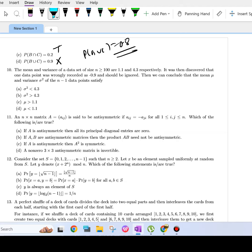Mean and variance of a data set are given as 1.9 and 4.3 respectively. It was discovered that one data point was wrongly recorded as -0.9 and should be ignored. Then we can conclude that the mean μ and the variance σ² of the n-1 data points satisfy which of these.